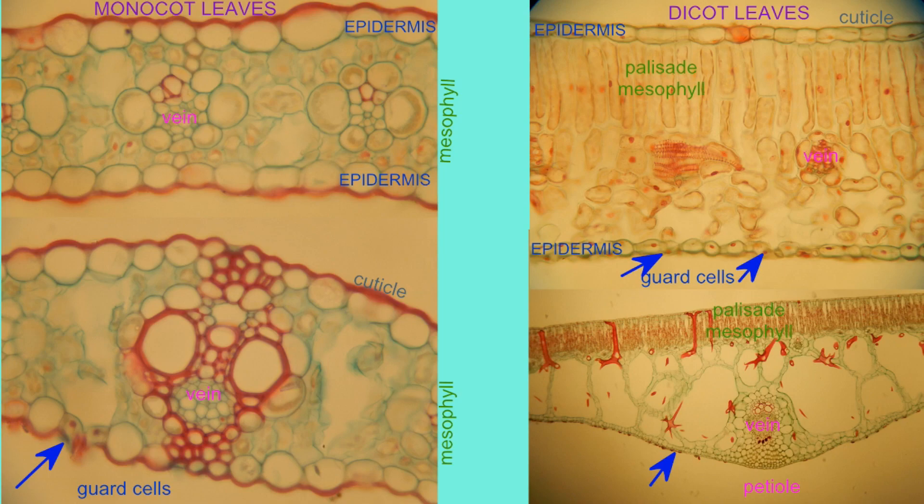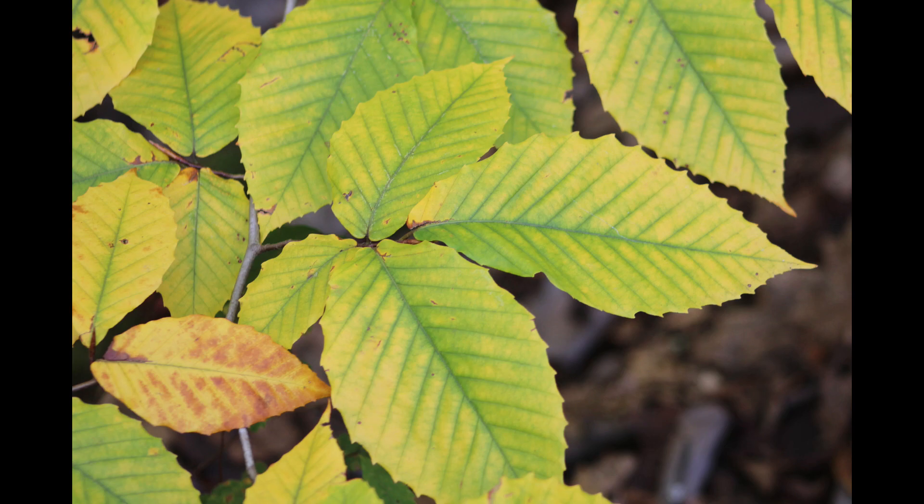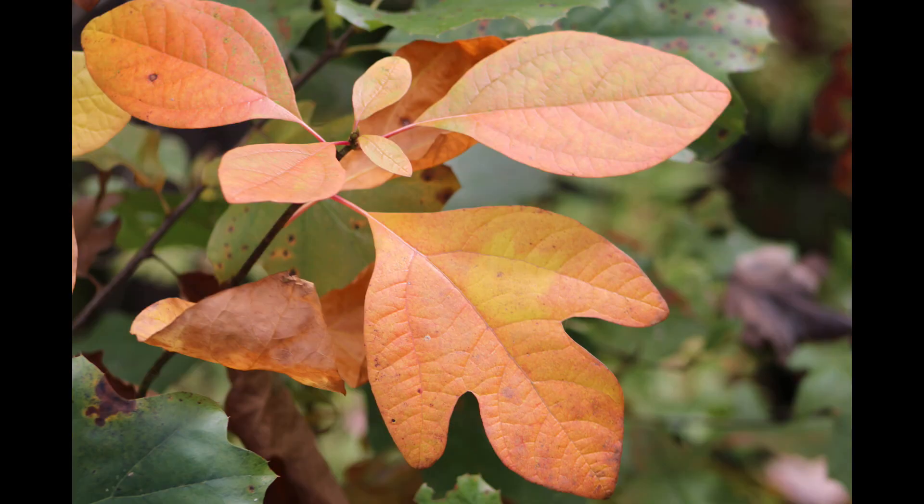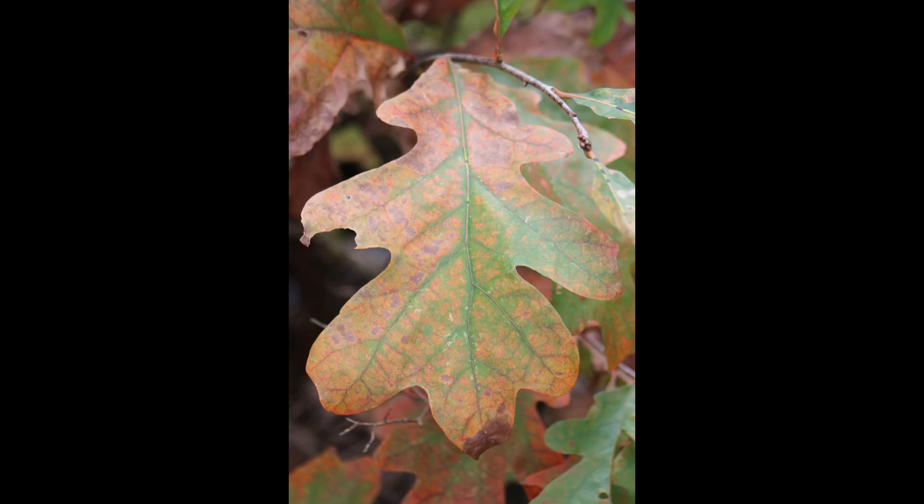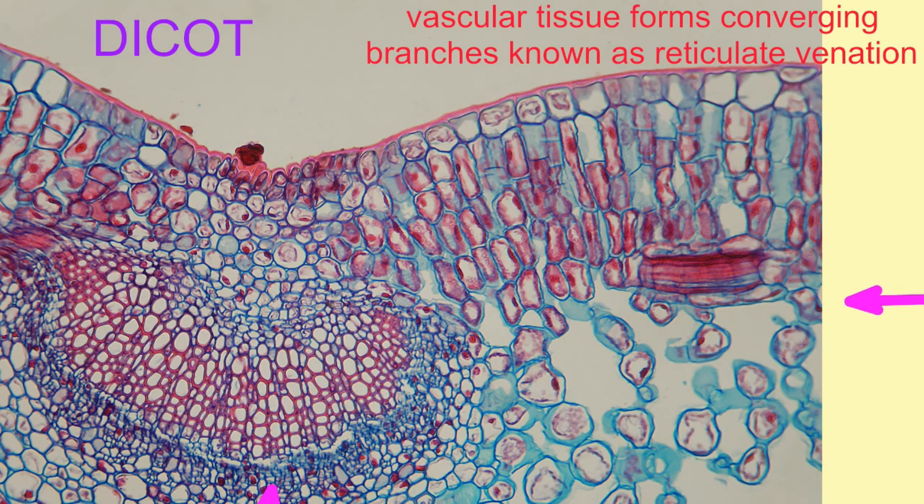While only one general layer of mesophyll exists in monocots. One can also observe, even macroscopically, a variation in how the veins are organized in the leaf. The veins contain the vascular tissue which transports both water and sugar.